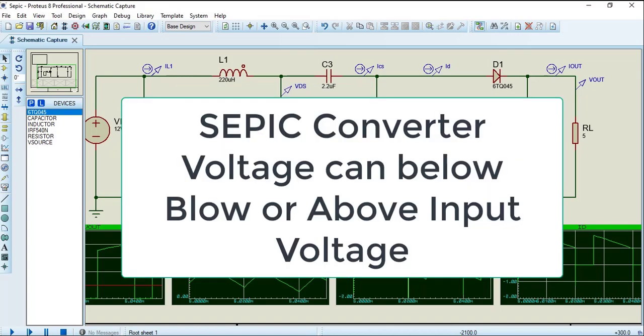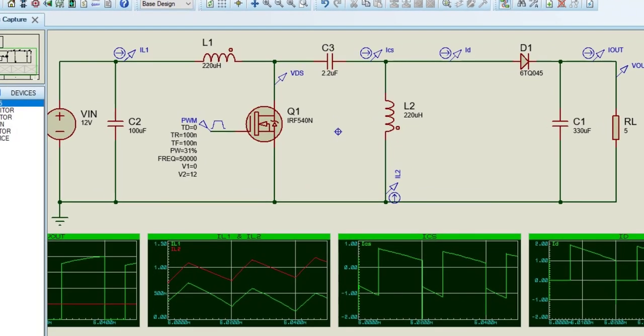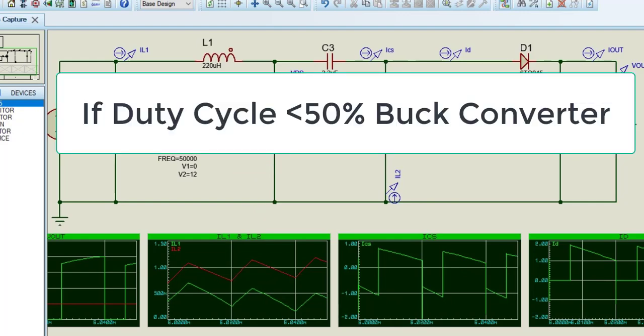The SEPIC converter is a configuration where the voltage output can be above or below the input voltage. In fact, in this particular design both boost and buck converter do coexist. This is a circuit diagram of SEPIC converter. The output of the SEPIC converter is controlled by the duty cycle of the control switch, such as MOSFET. If the duty cycle is less than 50%, then the circuit will behave as a buck converter.